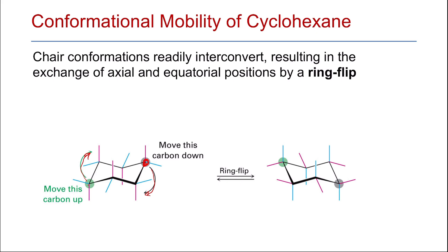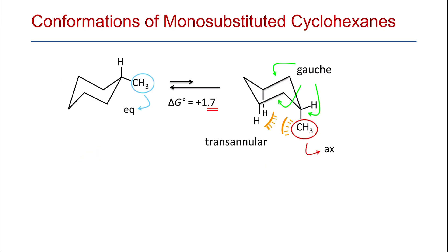Before the ring flip, all the axial substituents shown in red were in the axial position. After the ring flips, all the red ones have changed and become equatorial, while the blue ones, which were equatorial, became axial. This ring flip is quite significant and important when talking about substituted cyclohexane, because the equatorial and axial positions do not have the same energy. When a large group such as a methyl group is in the axial position, it is of higher energy than when the methyl group is in the equatorial position.